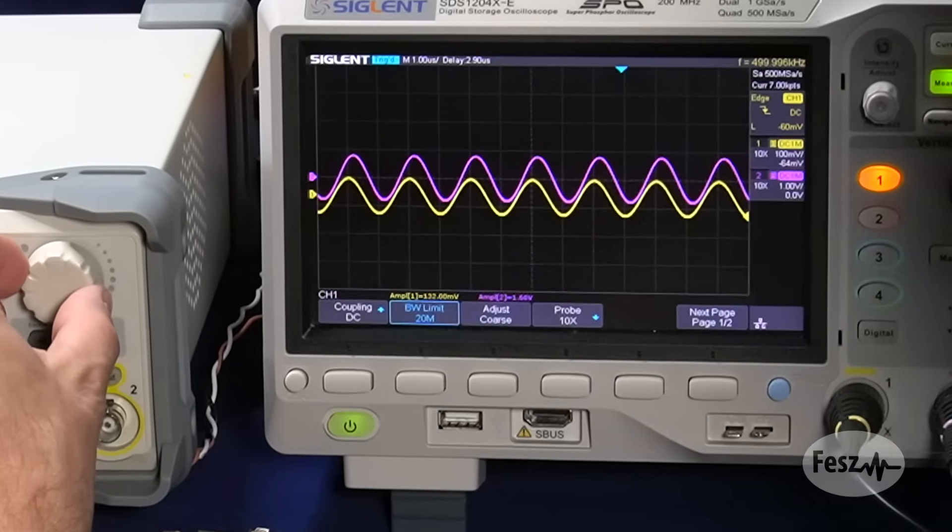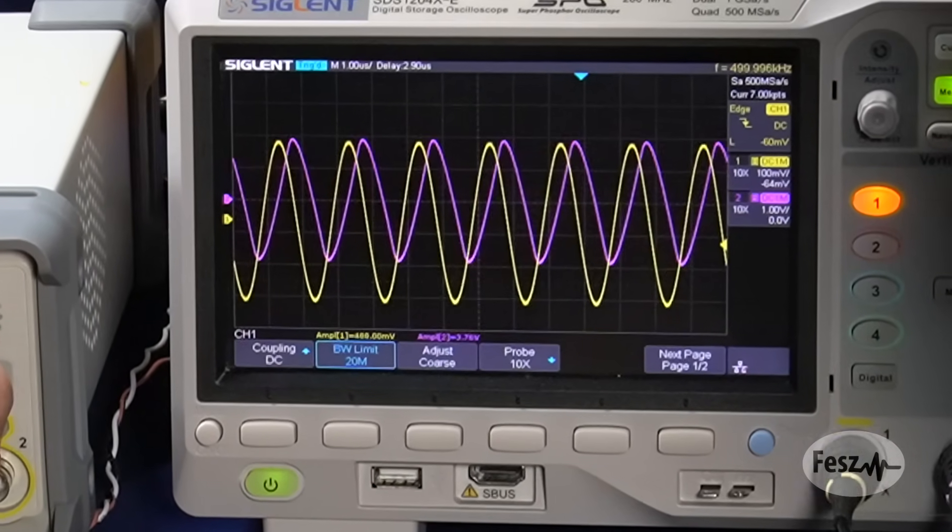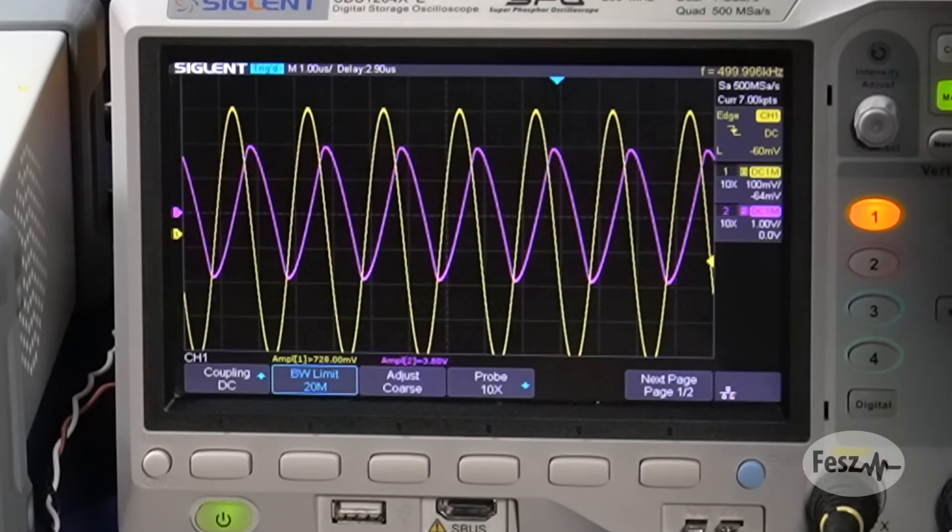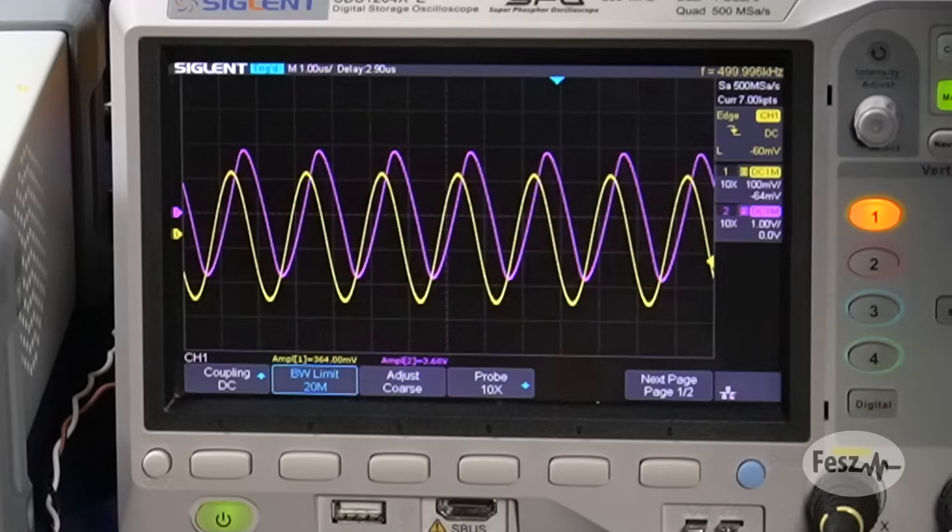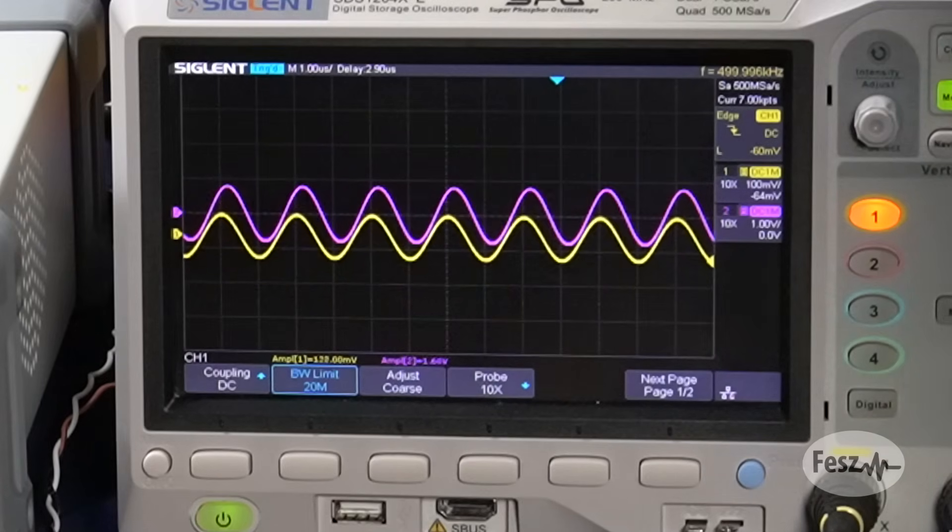So, while the op-amp is capable of amplifying a 500kHz signal by a factor of 11, this will only happen without distortion, as long as the output is small enough to not exceed the slew rate limitation.